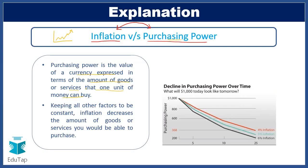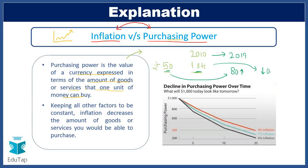Let's see the practical applicability. Say Rs. 50 was able to buy 1 litre of petrol in the year 2010 — so its purchasing power was 1 litre of petrol. But due to inflation, petrol prices kept rising, and currently in 2019 the price per litre has reached Rs. 80. Now the purchasing power of Rs. 50 has come down significantly to approximately just 600 ml of petrol. This clearly shows how inflation erodes purchasing power — as inflation increases, purchasing power of domestic currency decreases, hence they have an inverse relation.